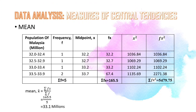For data analysis, under measure of central tendencies, we find the mean. The formula of mean is total fx divided by total f. The mean is 33.1 million, which represents the average population of Malaysia from 2018 to 2022.